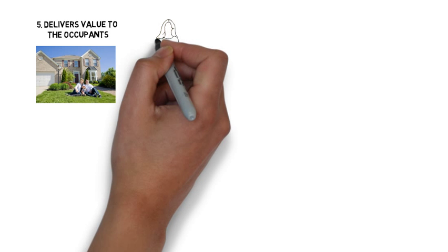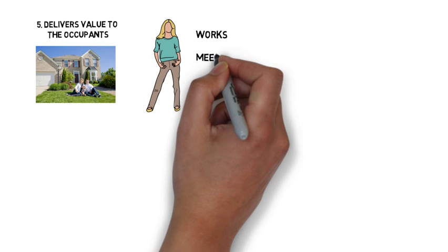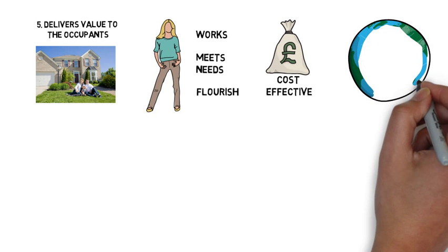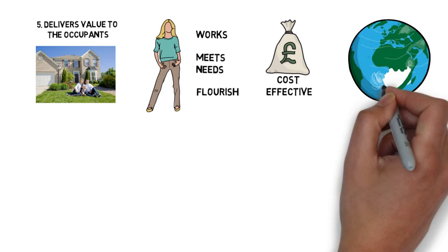And finally, BREAM ultimately aims to deliver real and demonstrable value to the occupants or owners of the building. A building that works, that meets the needs of the occupants or owners, helps them flourish, is cost-effective over the life of the building, and that operates within the limits of the Earth's finite resources.